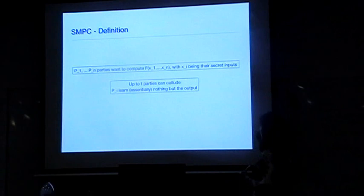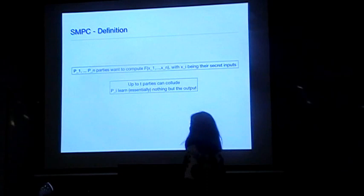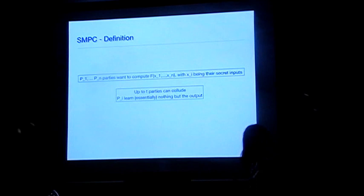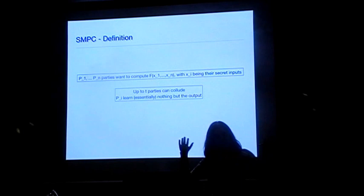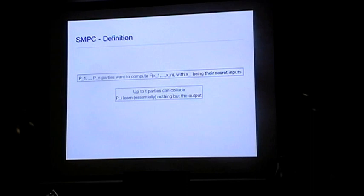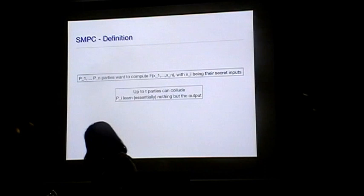So what is secure multi-party computation? You have N parties who want to compute some joint function of inputs X1 to XN, where each Xi is their private secret. Up to T parties might be malicious — they might try to deviate from the protocol. You want to make sure that at the end, when we evaluate the function and broadcast the output, each party doesn't learn anything more than the output.